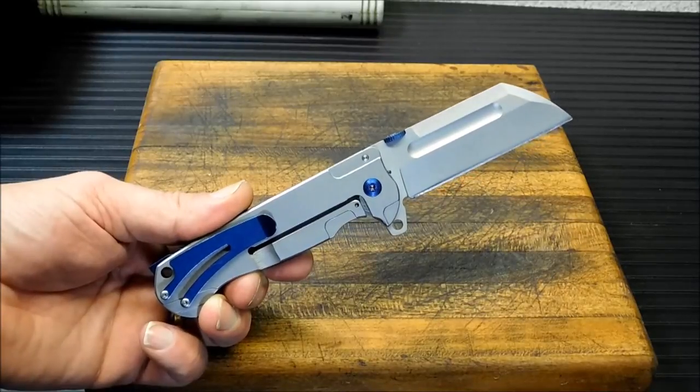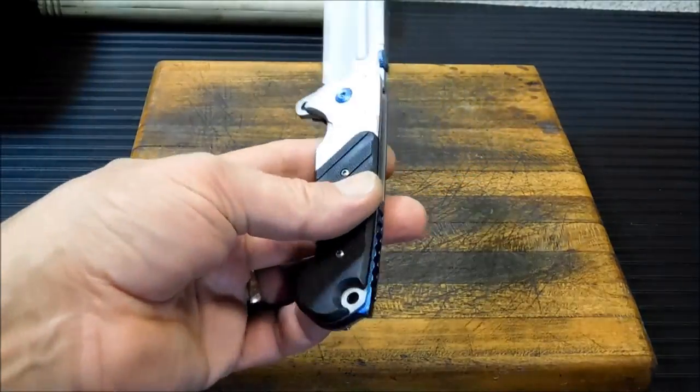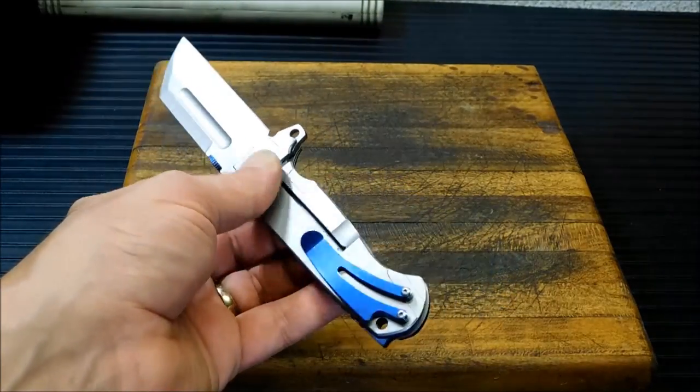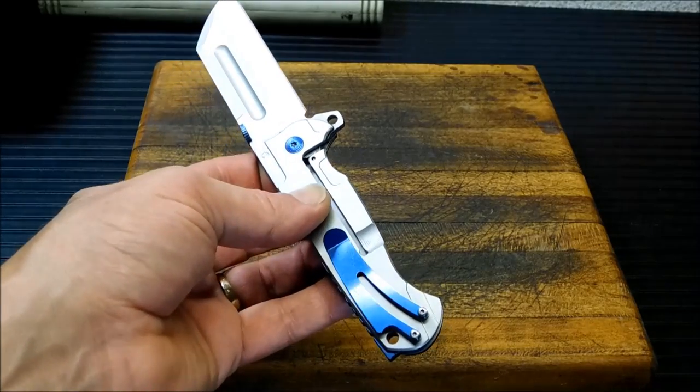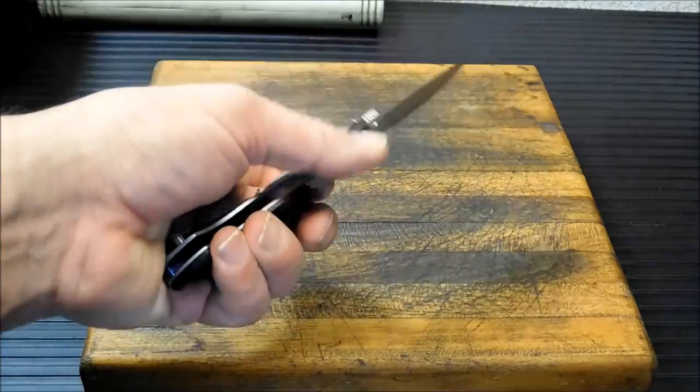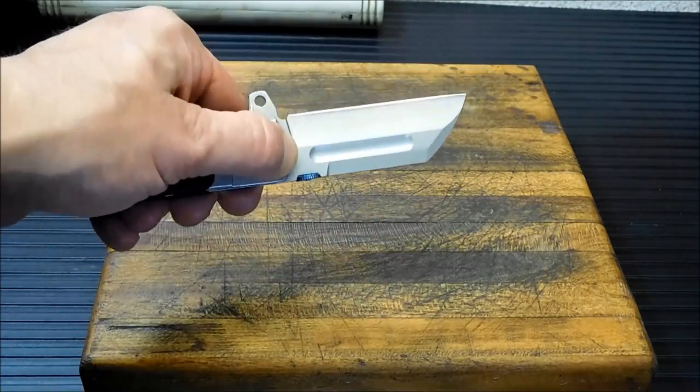Alright. Blade steel on this is 5CR15MOV. It's got a little G10 insert on this side, it's an open liner lock. Stainless steel on the other side. Open, it is 7.8 inches long. Closed, it is 4.5 inches long, and the blade length is 3.3 inches.